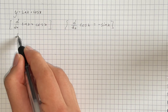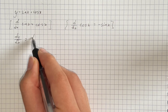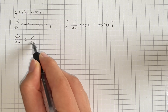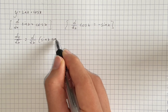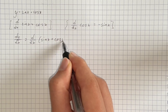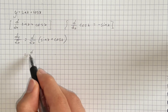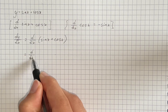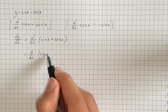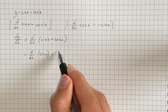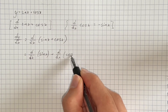So now I'm going to differentiate our function with respect to x. That's going to be the derivative of sine of x plus cosine of x. I'm going to find the derivatives separately — that's the derivative of sine of x plus the derivative of cosine of x.